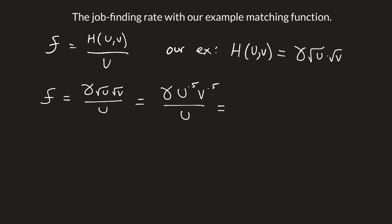When we have exponents divided by each other, we subtract the exponents. So this is gamma*u^(-0.5)*v^0.5.